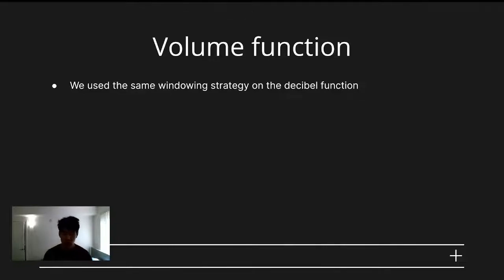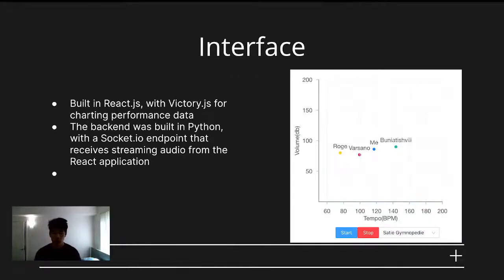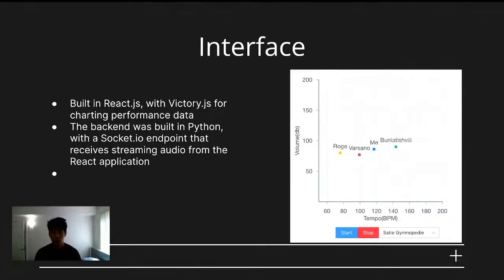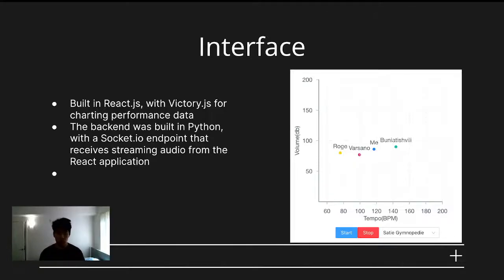For consistency, we used the same strategy of computing volume on overlapping windows for the volume function as well. The definition for volume was given by the decibel formula. We built the web application in the framework React.js with a visualization library called Victory.js. The application was designed to stream audio packets from the browser to the backend Python server. The server accepts audio packets through a socket endpoint, which essentially collects data until it meets the window size length, then computes and emits data to the frontend, and then wipes out about two-thirds of the data previously in the buffer.